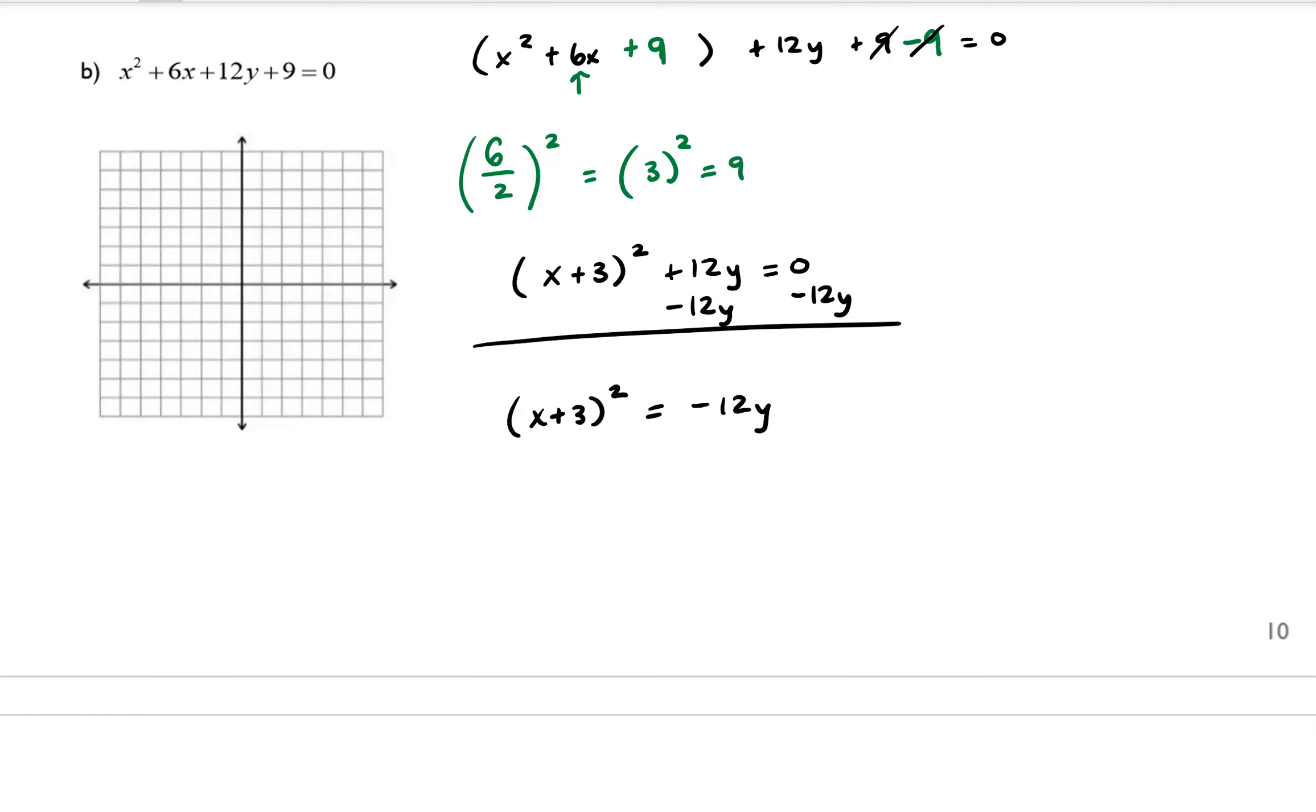Now, because normally our parabola is x² on this side, but now we have (x + 3)², that means that our vertex is going to be located at (-3, 0) instead of at the origin. So my vertex is going to be right here. And then we can decide whether our parabola is going to face upward or downward based on the p value.